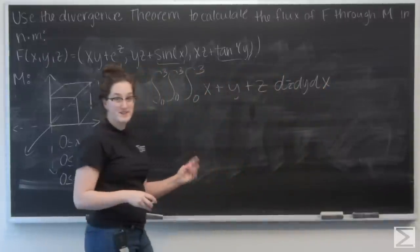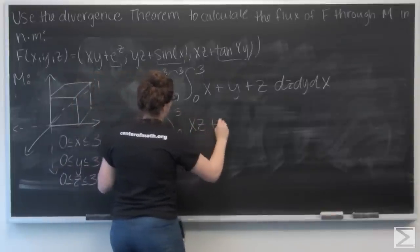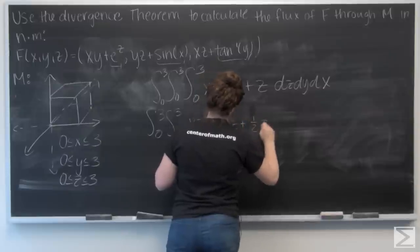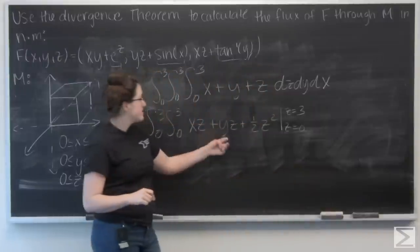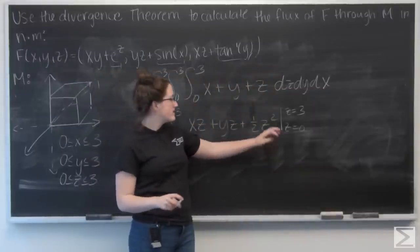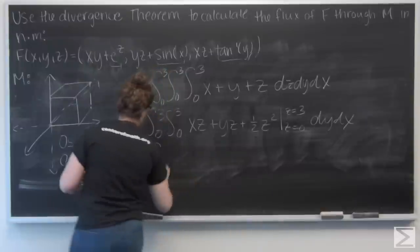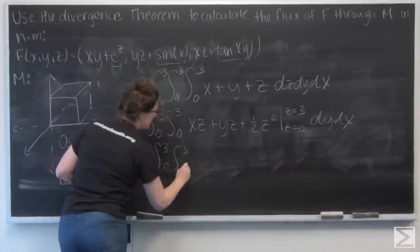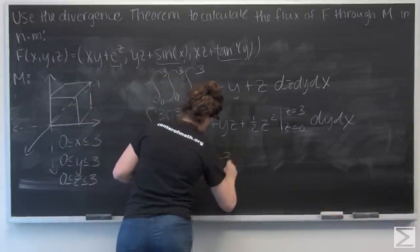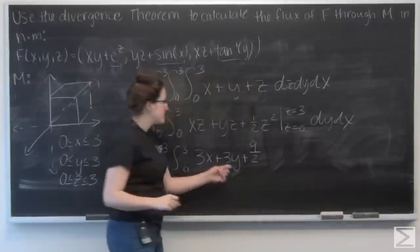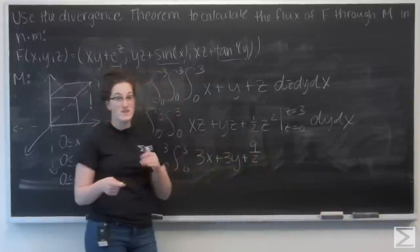And let's go ahead and integrate with respect to z. So I get xz plus yz plus one half z squared, and I'm going to evaluate that from z equals 0 to z equals 3. So let's start by plugging in 3 everywhere I see a z. So I have 3x plus 3y plus 9 halves, and then when I plug in z equals 0, each one of these terms has a multiple of z, so that's actually just going to be 0.